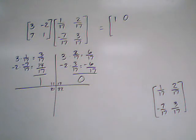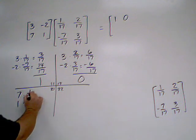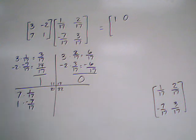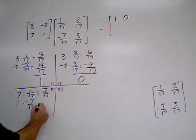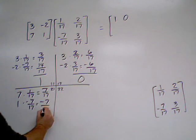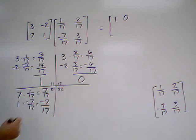Now, we'll move down to row 2, so 7 and 1. And we're back to column 1, so 1 seventeenths and then negative 7 seventeenths. This gives us 7 seventeenths and negative 7 seventeenths. If we add these together, we get 0 again.